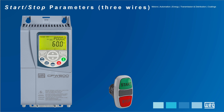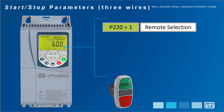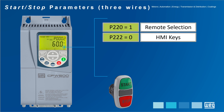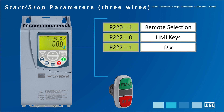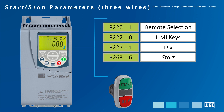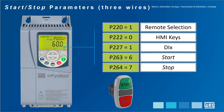You must set some parameters in the drive so the ON and OFF function by three-wire command can be executed. In this example we recommend P220 to 1 for remote selection, P222 to 0 for remote speed reference by HMI, P227 to 1 which defines the source for the TURN STOP command in the remote situation via digital input, P263 to 6 which is the function of digital input DI1 for the START command, and finally P264 to 7 which assigns the function of digital input DI2 as STOP.